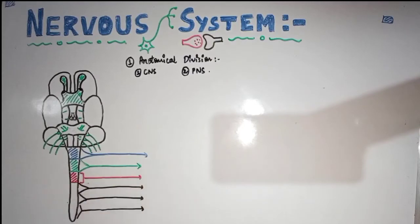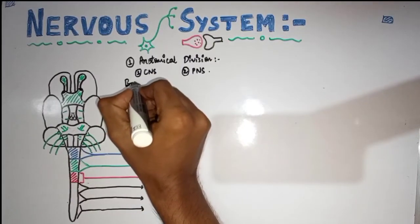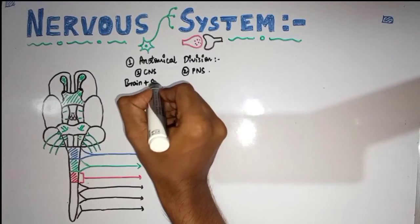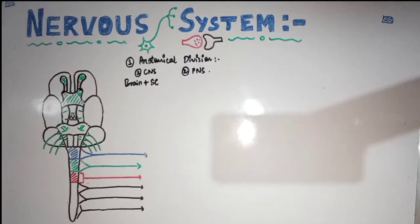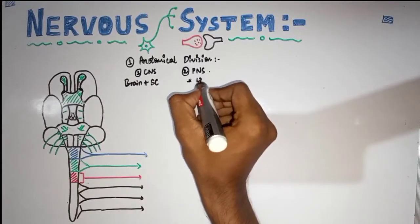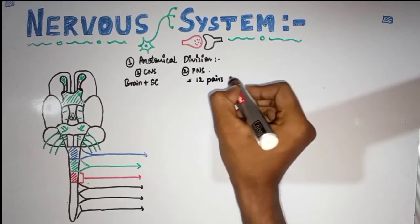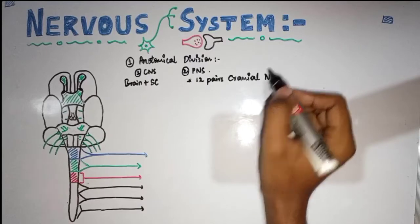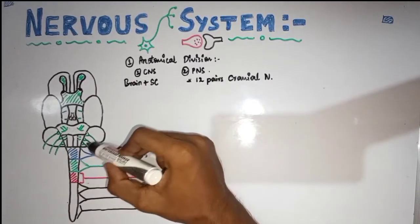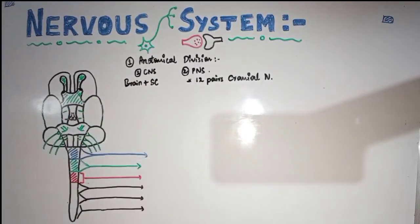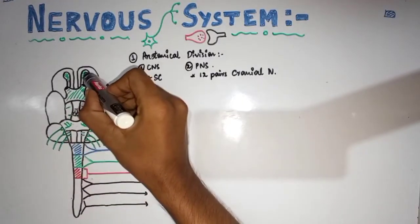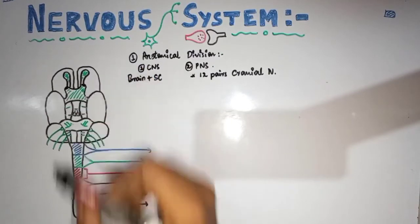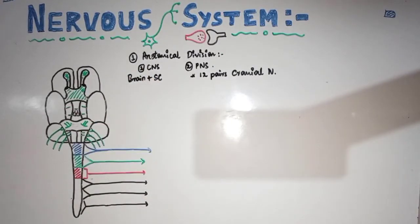In this figure you can see the central nervous system consists of the brain plus spinal cord. The peripheral nervous system consists of 12 pairs of cranial nerves. In this figure, the nerves shown in green are the cranial nerves — for example, the olfactory nerve and the optic nerve.